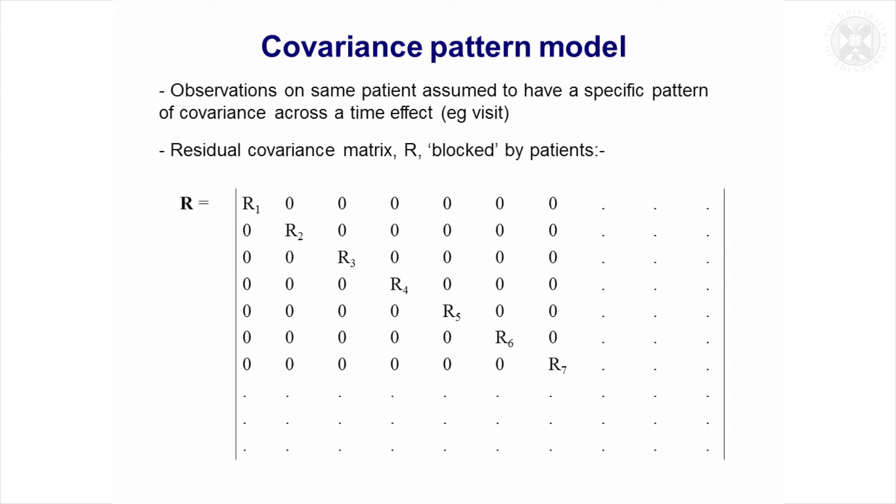I'll spend a bit of time describing what covariance pattern models are. These are a mixed model approach where you can allow the observations on the same unit to have a pattern of correlations. I'll try and illustrate this using a matrix format. This is the overall variance-covariance matrix for the error terms, the residuals in the model.